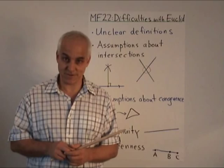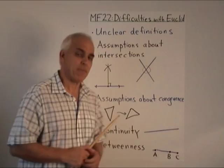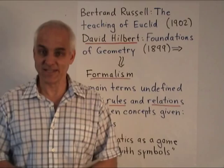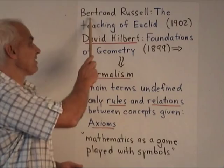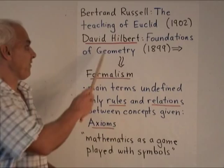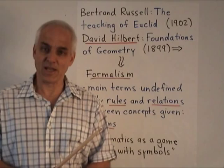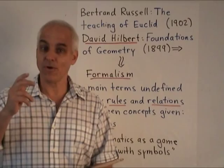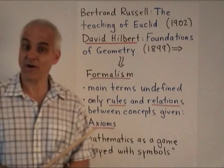But first, let's have a look at some developments that resulted from these logical flaws. Around the beginning of the 20th century, the difficulties of Euclid could no longer be avoided. Bertrand Russell wrote an important essay called 'The Teaching of Euclid' where he laid out very clearly some of the logical difficulties that people had been ignoring. David Hilbert, who was one of the most prominent mathematicians of the time, certainly realized the importance of not only acknowledging Euclid's difficulties, but also overcoming them. He wrote a book called 'Foundations of Geometry,' which was very influential with mathematicians, but completely ignored by mathematics educators.